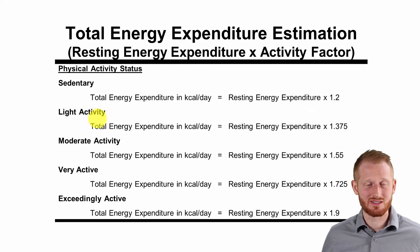Light activity means you do a little bit more. Maybe you walk around the block with your dog or do something else that's pretty minimal activity each day. But now we have 1.375 for the activity factor for light activity.